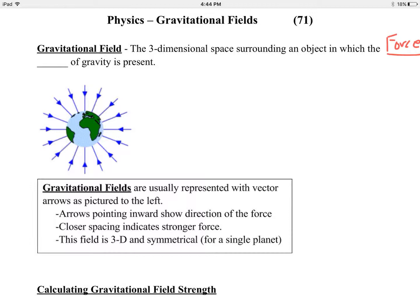The gravitational field pulls inward — it is the space that surrounds an object. You have to add the three-dimensionality in your mind since we can't draw three-dimensionally on paper. The arrows point in the direction of the force that would act on an object that came near the earth. The closer spacing near the earth indicates the field is stronger there. As you get farther from the earth, the lines spread apart due to geometry, so the field is weaker — and therefore the force you feel would be weaker, according to the inverse square law.